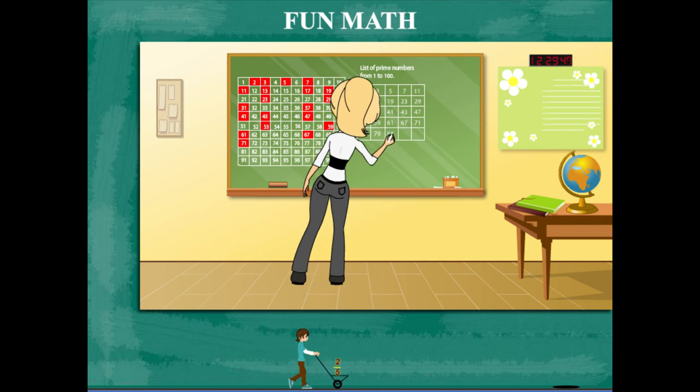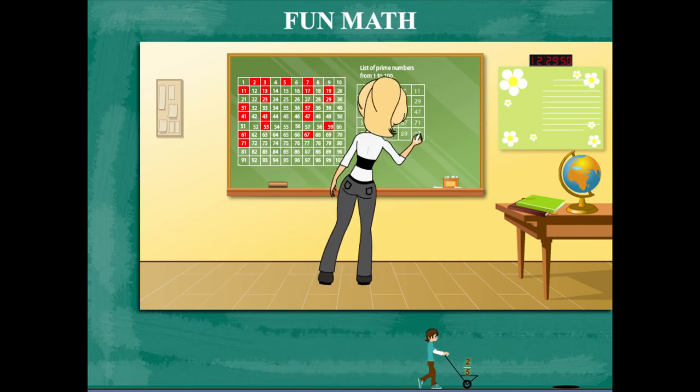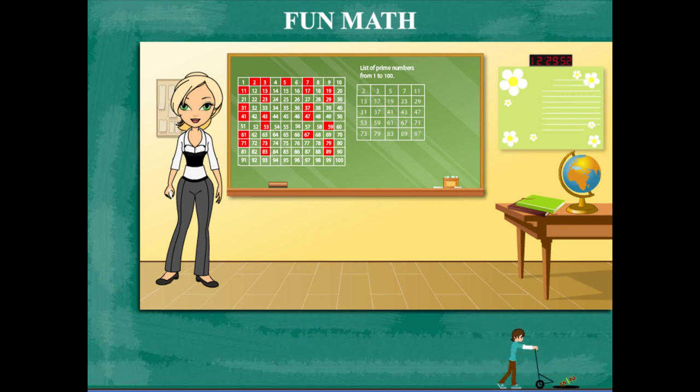73, 79, 83, 89 and 97 in the fifth row. Prime numbers can be divided by themselves and 1, so they have only two factors. That was fun!